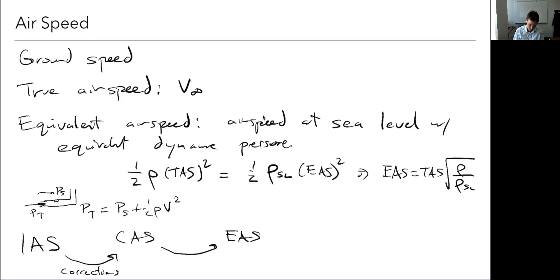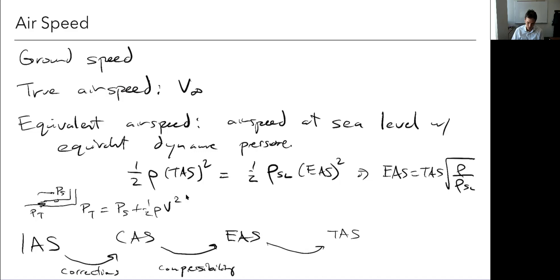After calibration this becomes calibrated airspeed (CAS). The pitot tube measurement fails for compressible flow — the simple difference formula is only correct for low-speed incompressible flow. For compressible flow, a more complicated expression relates total and static pressure. Adding a compressibility correction yields equivalent airspeed, which may require a digital airspeed measurement device. Then from equivalent to true airspeed, we use the actual local air density, and to get ground speed we add the local wind. The most important of these for us are true airspeed and equivalent airspeed.